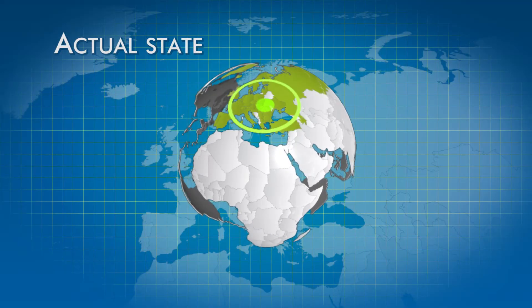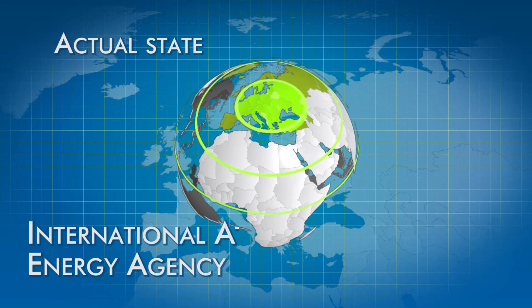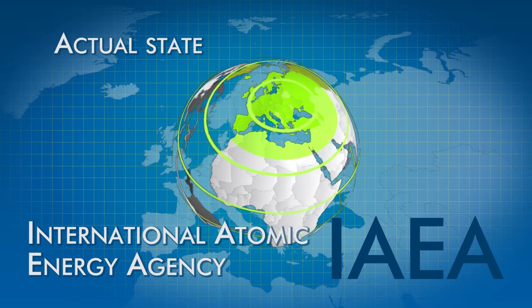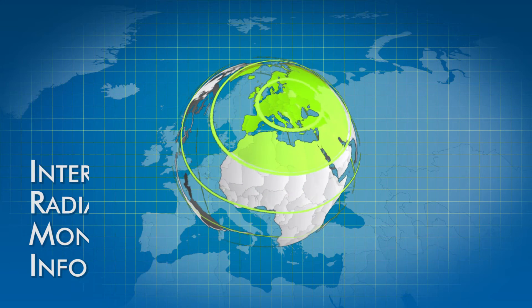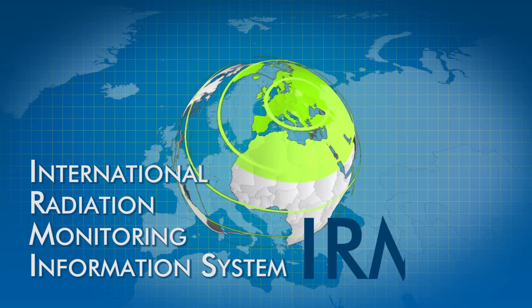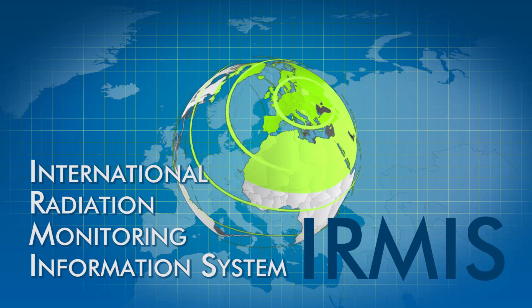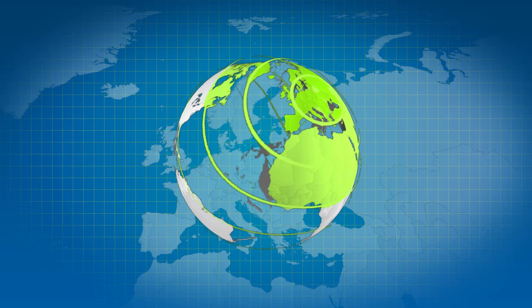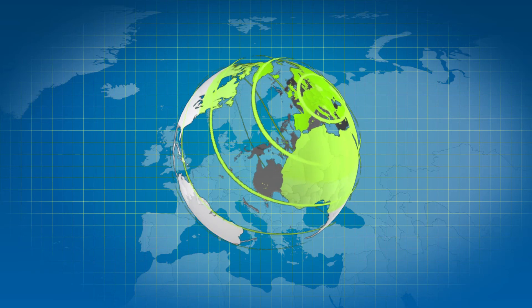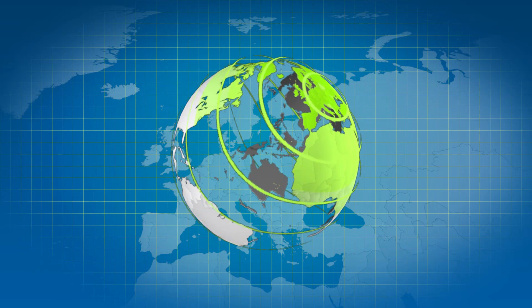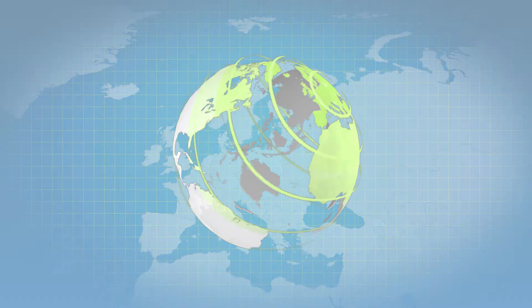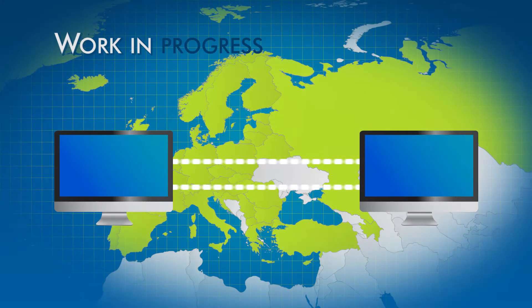EUDREP has served as a model for the International Atomic Energy Agency to set up their international radiation monitoring information system. EUDREP's concept of regional networks is a prototype which can be used in other parts of the world.